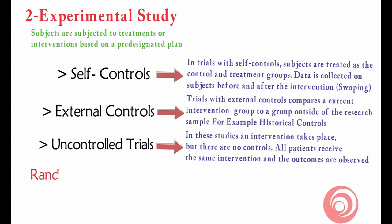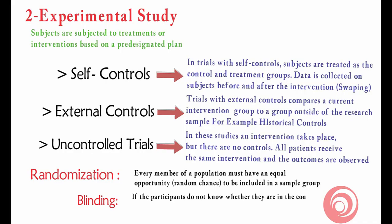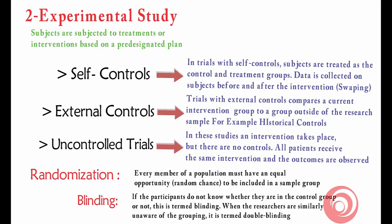We should also know the concept of randomization — when every participant of the research is selected randomly, meaning they get an equal chance to be selected in the study. This is called randomization. Blinding is when the participant doesn't know whether they are in the treatment group or control group. When the principal investigator also doesn't know, this is called double blinding.